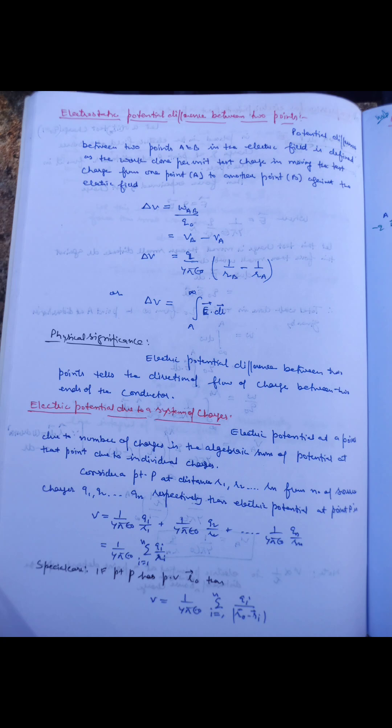Potential difference between two points A and B in the electric field is defined as the work done per unit charge to move that charge from one point to another. Electric potential at a point due to a number of charges is the algebraic sum of potentials at that point due to individual charges.